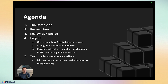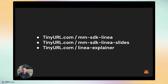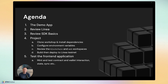The agenda: we have a demo app we'll clone and configure, a review of Linea, and a review of the SDK basics. In our project we'll clone the workshop, install dependencies, configure environment variables, and review the blockchain and web workspaces — different folders within our workspace. We'll then build and deploy to Linea Testnet, test the front-end application from minting and testing the contract, and check that wallet interaction is in sync with our application.